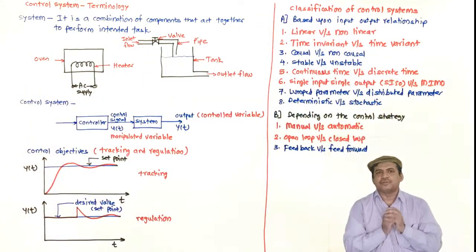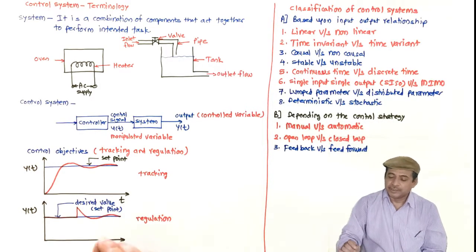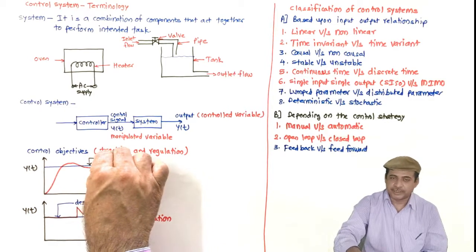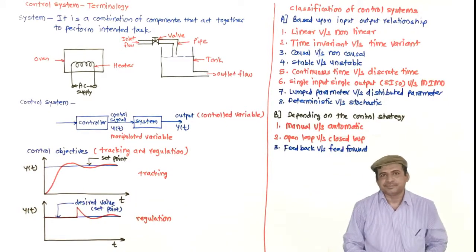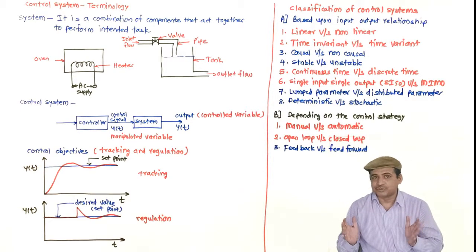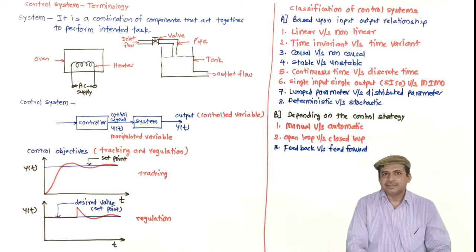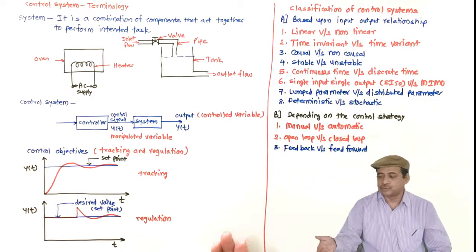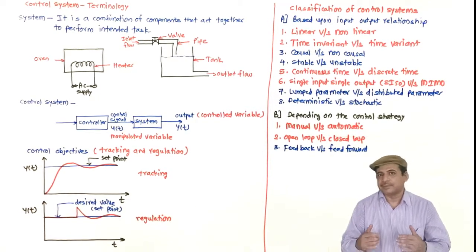This covers the complete terminology of the control system. Our purpose is to keep the controlled variable at its desired value — that is, the set point — irrespective of set point changes and disturbances. In the due course, we will see several methodologies to accomplish this. In the next class, we will cover the concept of open and closed loop systems, feedback and feedforward systems, with their features, comparison, and real-life examples. Thank you.